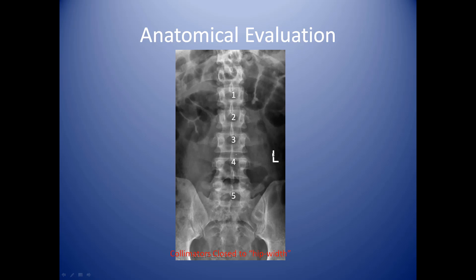We also have a left marker indicating the patient's left side. We can also see the intervertebral spaces between the vertebrae, which help us to know that we have a good camera angle on the film.